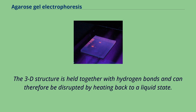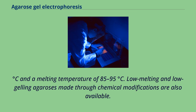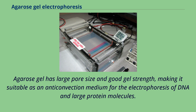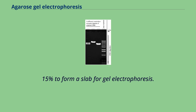The melting temperature is different from the gelling temperature. Agarose gel has a gelling temperature of 35–42°C and a melting temperature of 85–95°C. Low melting and low gelling agarose made through chemical modifications are also available. Agarose gel has large pore size and good gel strength, making it suitable as an anti-convection medium for electrophoresis of DNA and large protein molecules. The pore size of a 1% gel has been estimated from 100 nm to 200–500 nm.